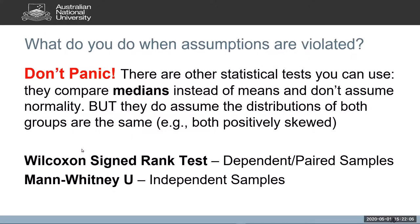So what do you do when the assumptions are violated? Don't panic — there are other statistical tests you can use. For a t-test in particular, you can compare medians instead of means, which do not assume normality, though they do assume the distributions of both groups are the same shape — for example, that they are both positively skewed. Examples of these tests are Wilcoxon's signed rank test and Mann-Whitney U.